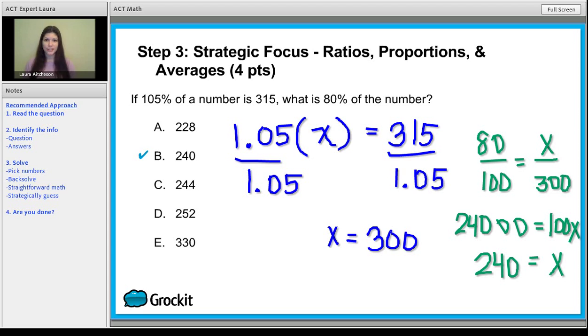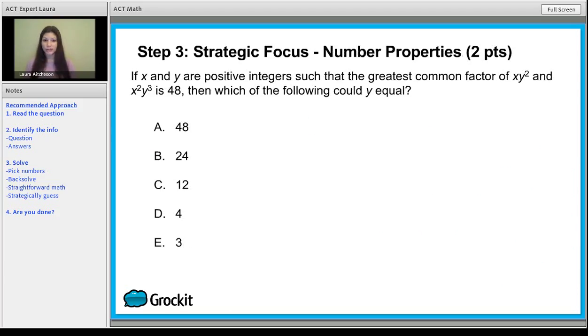And in addition to what we just saw, don't forget about your number properties. Our final category for week one is number properties. And this is another classic question. If x and y are positive integers such that the greatest common factor of xy² and x²y³, or y cubed, is 48, then which of the following could y equal? Oh my goodness, that was a lot of information. What we're going to do for this question, and you can actually memorize this approach because you are likely to see a question like this on test day, is you line them up and you see what they have in common.